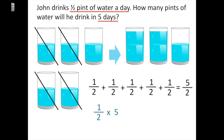Remember, repeated addition is the same thing as multiplication. So what I'm also doing here is multiplying one-half times five — I have five one-halves. To solve through multiplication, I multiply my numerator by the whole number: one times five is five. I put five in my numerator and keep two in the denominator. So one-half times five equals five halves.